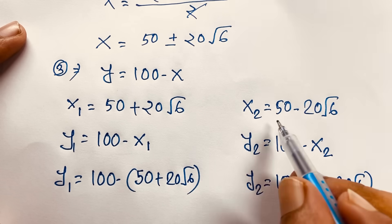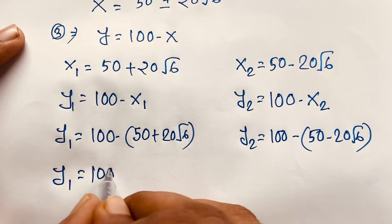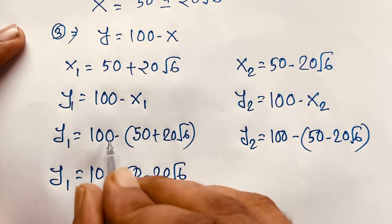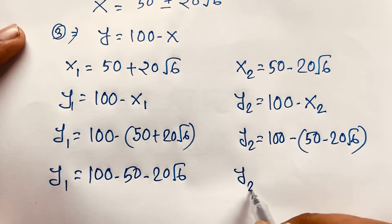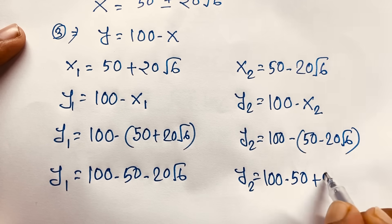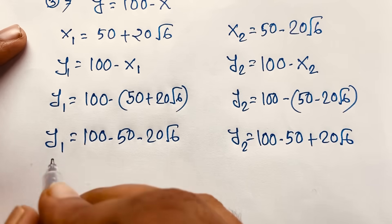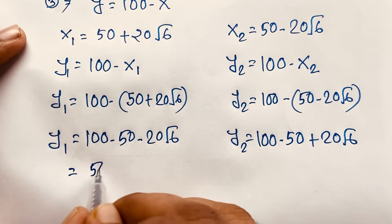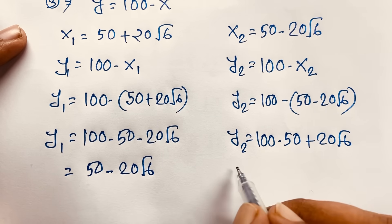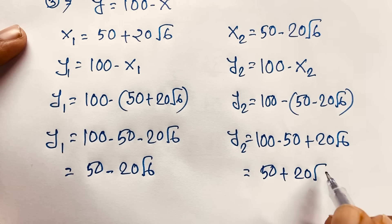Now, y₁ is 100 minus x₁, and y₂ is 100 minus x₂. So y₁ is 100 minus (50 minus 20 square root of 6), which gives 50 plus 20 square root of 6. And y₂ is 100 minus (50 plus 20 square root of 6), which gives 50 minus 20 square root of 6.